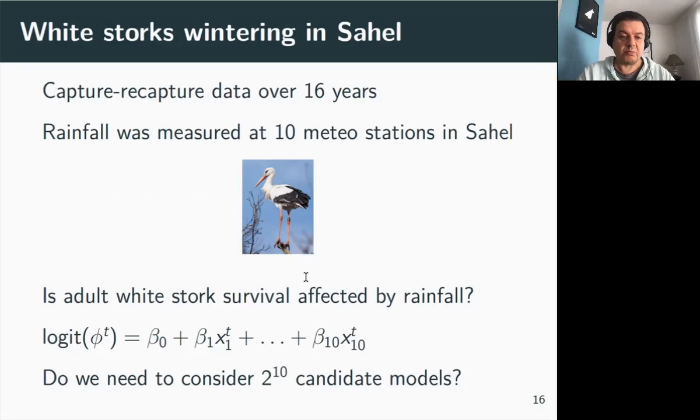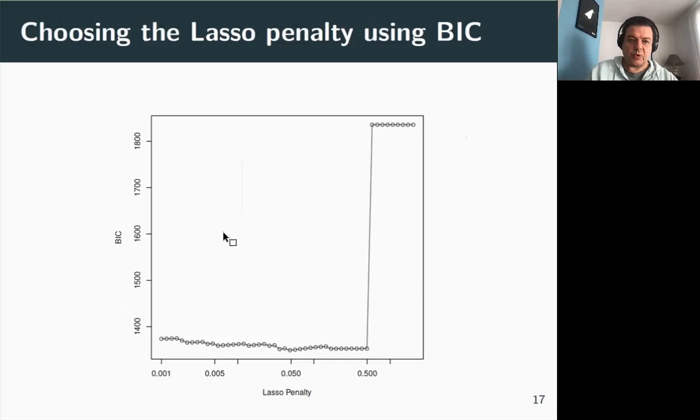The idea being if it's more rainy, you have more resources in the winter and you do better the next year. In other words, which of the 10 betas corresponding to the 10 weather stations are non-zero? Here, the betas and the 10 stations. If you go for a model covariate selection approach with AIC, it's not less than 2 to the power of 10 candidate models that you need to consider. All the possible combinations of these 10 covariates.